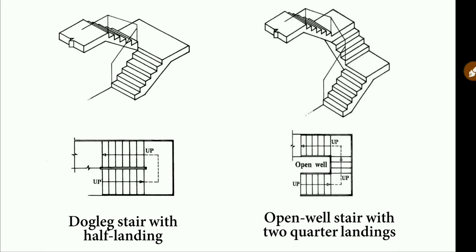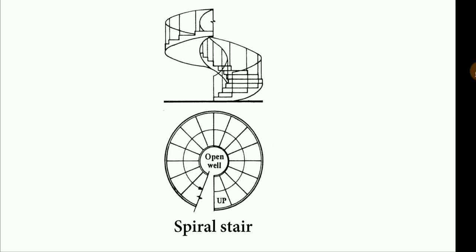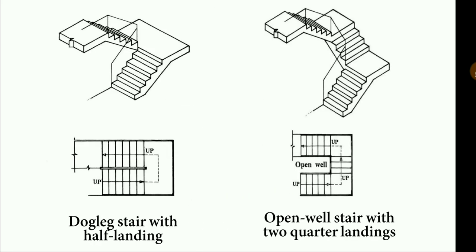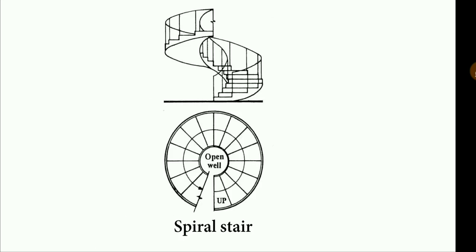Next is the dog leg stair with half landing. This is the most commonly used type of staircase in buildings, which we will design in our later lectures. The next one is the open well stair with two quarter landings. The next one is the spiral staircase — this type of staircase you will see in different movies. These are basically used for indoor purposes to make buildings extremely beautiful.